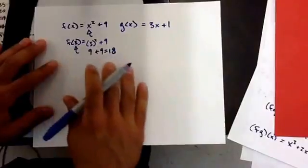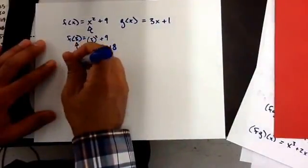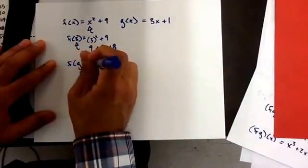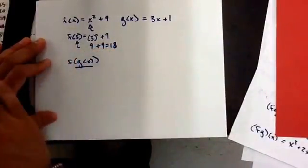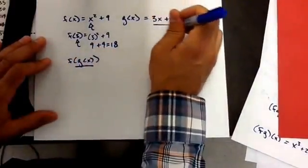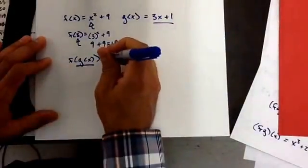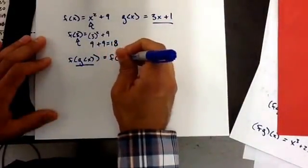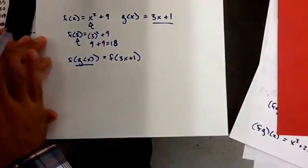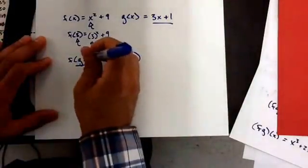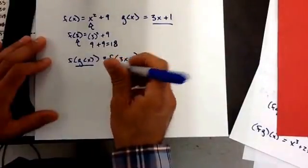You're doing the same thing if I tell you f(g(x)). This means that instead of x, you're going to plug in whatever g was. So this is the same thing as saying f(3x plus 1), because that's what g(x) is. I just took out the g(x), and I replaced it with what g(x) is.